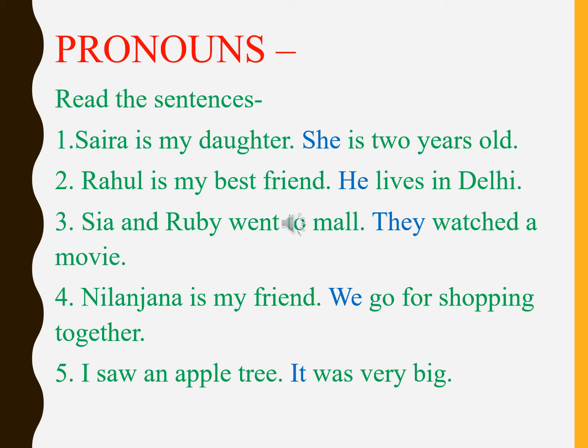Number three: Sia and Ruby went to the mall. They watched a movie. Now students, whenever we talk about more than one person, the pronoun that we use is 'they'. Here, Sia and Ruby is replaced by the pronoun 'they'.